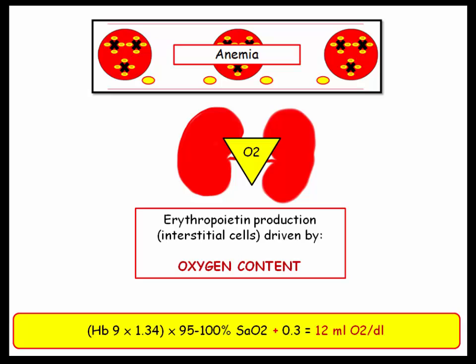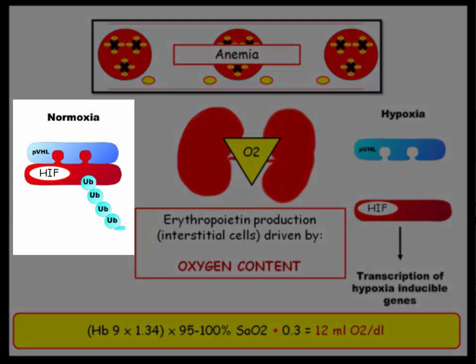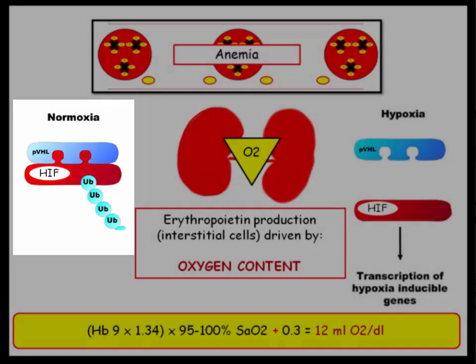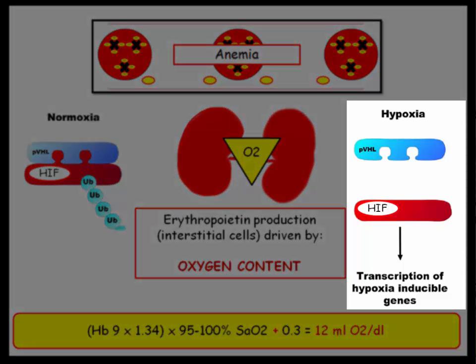It is the loss of renal mass and these interstitial cells that causes the anemia associated with chronic renal failure. In this example, however, the kidney is working fine — we are addressing the physiologic response to anemia. It's probably low yield, but you have the ubiquitin-ligase complex bound to HIF, the hypoxia-inducible factor. The whole complex is attached to the von Hippel-Lindau gene regulator. In the setting of hypoxia, the ubiquitin-ligase complex dissociates, causing HIF to dissociate from the VHL regulator, and ultimately hypoxia-inducible genes stimulate the production of erythropoietin.